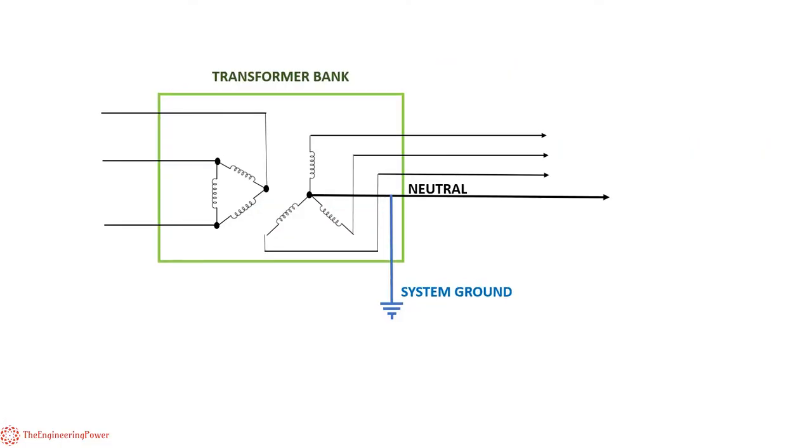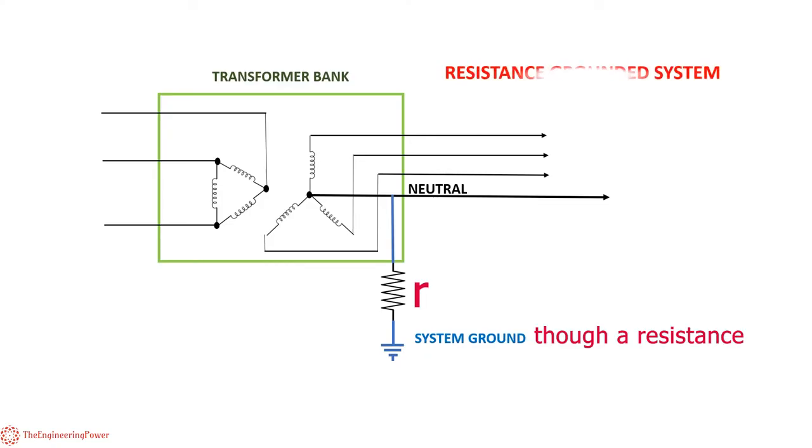In grounding, system neutral may be connected to earth with or without any resistance or impedance. If the neutral is connected to earth without any resistance, it is known as a solidly grounded system. In case the system neutral is connected to earth through a resistance, such system is called a resistance grounded system.